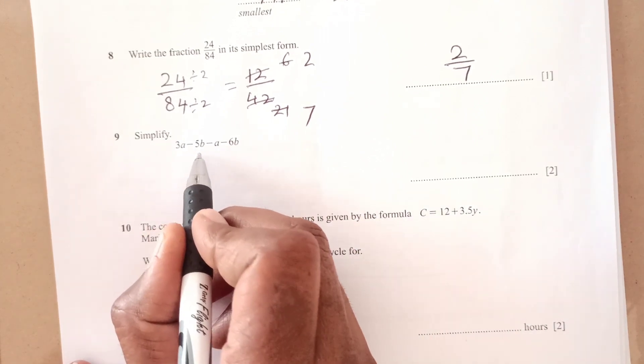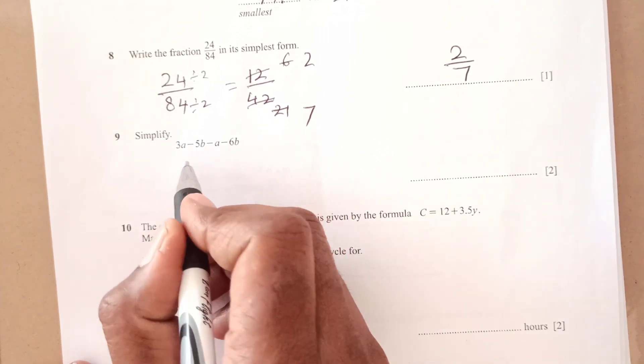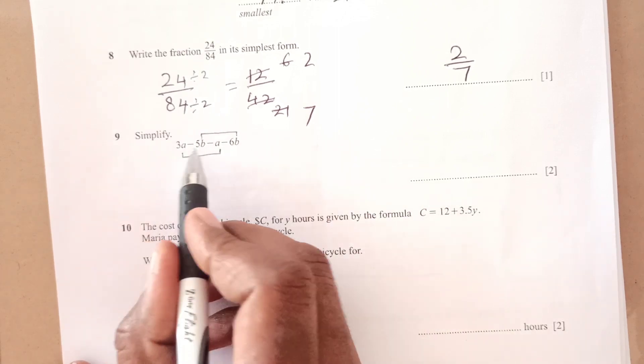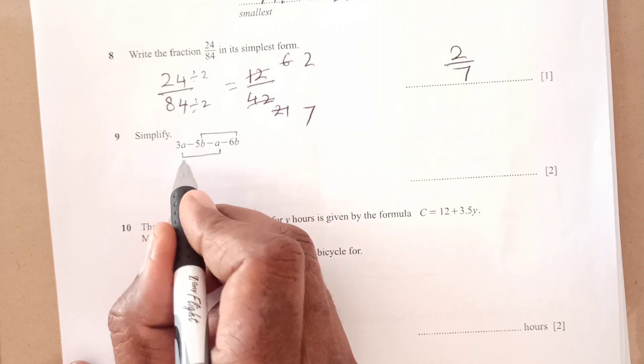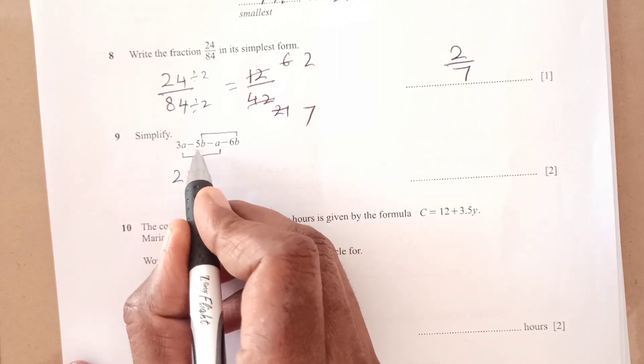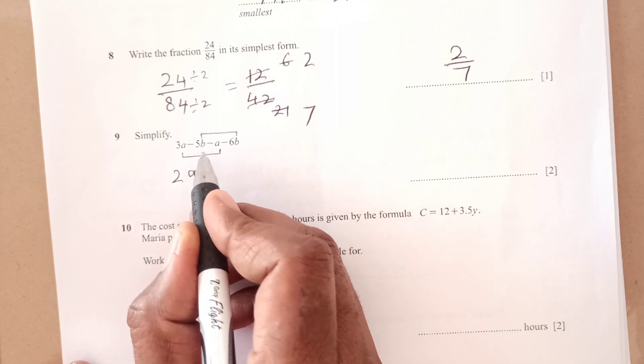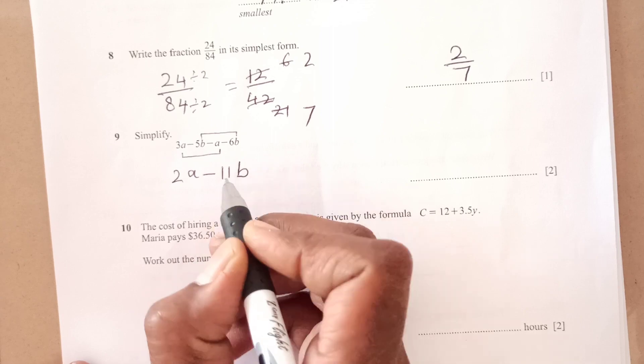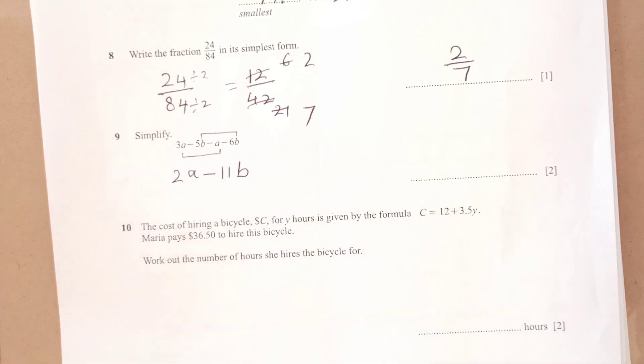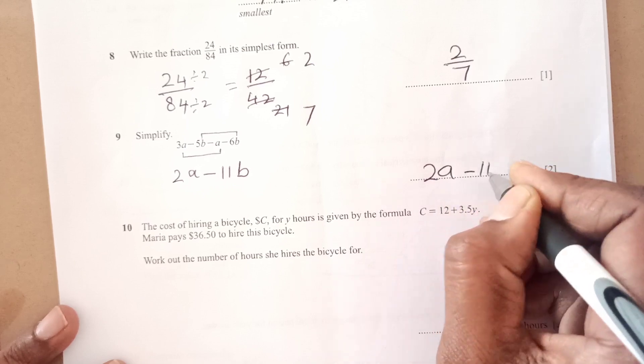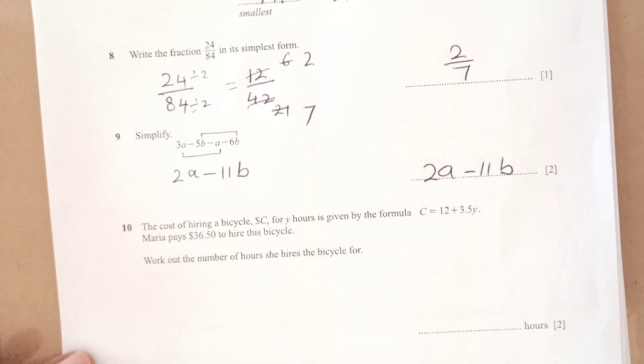Simplify 3a minus 5b minus a minus 6b. We are just going to combine the like terms, nothing else. So 3a minus a is, this is minus, 3 minus 1, it will be 2a. So negative 5, negative 6, negative 5b, negative 6b, 6 plus 5 is 11. We are going to add because they have same sign. So this is the final answer, 2a minus 11b.